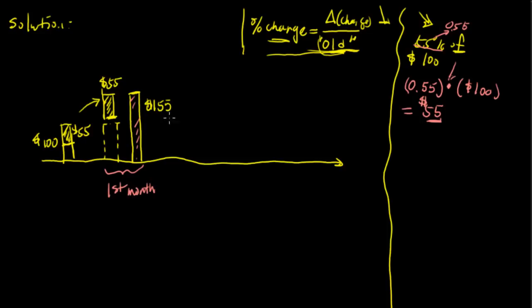Now what happens to the second month? The second month, the $155, the 55% of this $155, no longer $100, but $155, gets increased again. Okay, so this chunk, that's the 55% of the $155, gets added over here.